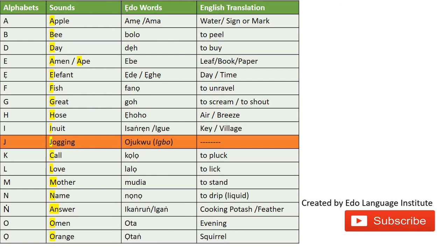Here we have an overview of the EDO alphabets which will continue on the next slide. We have some similar sounds in English language or similar English words that have similar sounds, and we have some examples of EDO words with that sound and their corresponding English translations.